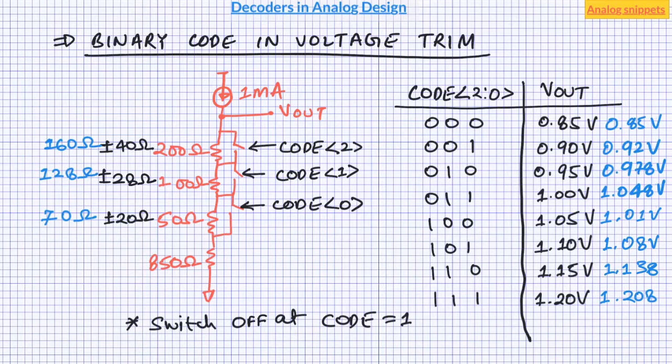Keep in mind that this non-monotonic behavior is a probabilistic event and it will not happen all the time. But there is a finite probability that it will go non-monotonic. Now plus minus 20 ohm variation in a 50 ohm unit resistor is quite unlikely, but even if you assume a smaller variation say 1 ohm then this problem will happen at a bigger code.